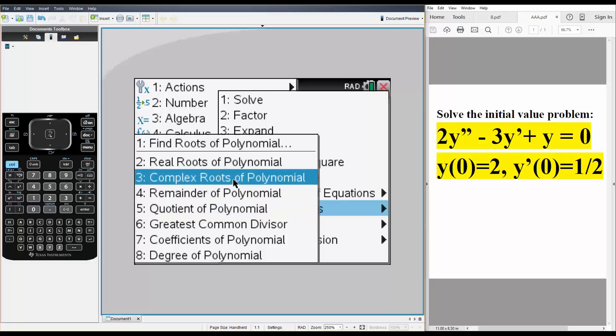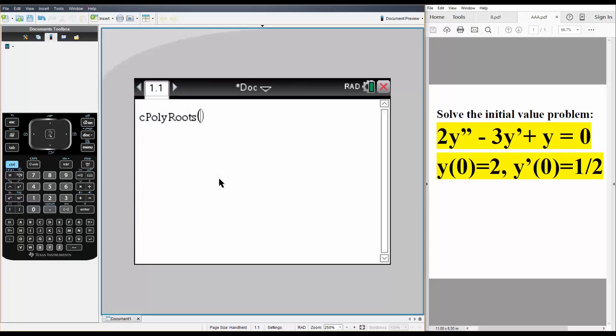We go down to complex root of polynomials and we're saying y double prime is represented by r squared, y prime is represented by r, and y is represented by 1. So we have 2 times r squared minus 3 times r plus 1. We do comma r like this, hit enter, and so our two roots would be 1/2 and 1.